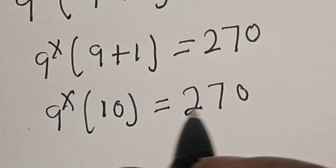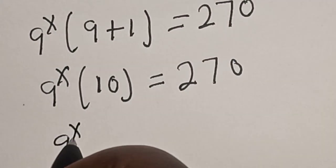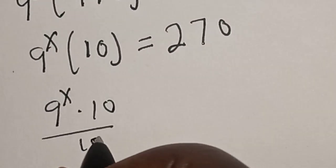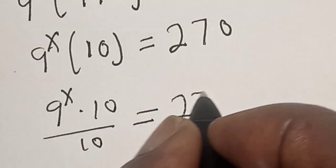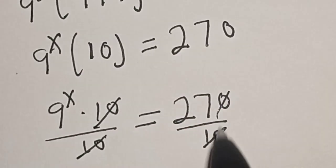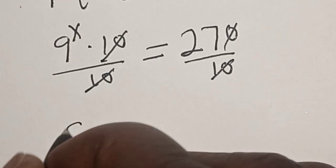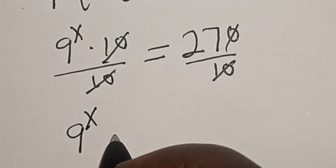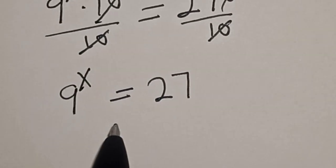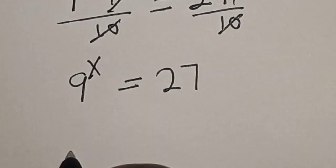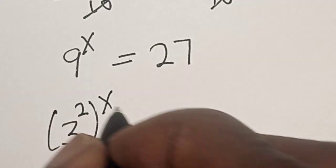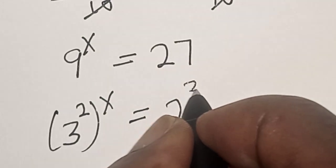Now let's divide both sides by 10. We have 9 raised to power s, multiplied by 10, divided by 10, is equal to 270 divided by 10. The 10s cancel, so we have 9 raised to power s is equal to 27.